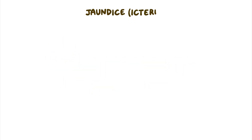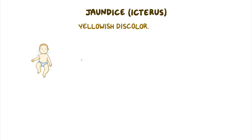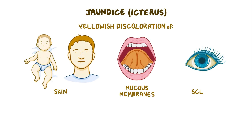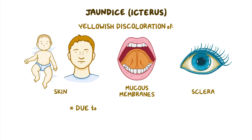Jaundice, also called icterus, is characterized by yellowish discoloration of the skin, mucous membranes, and the sclera due to the deposition of bilirubin.